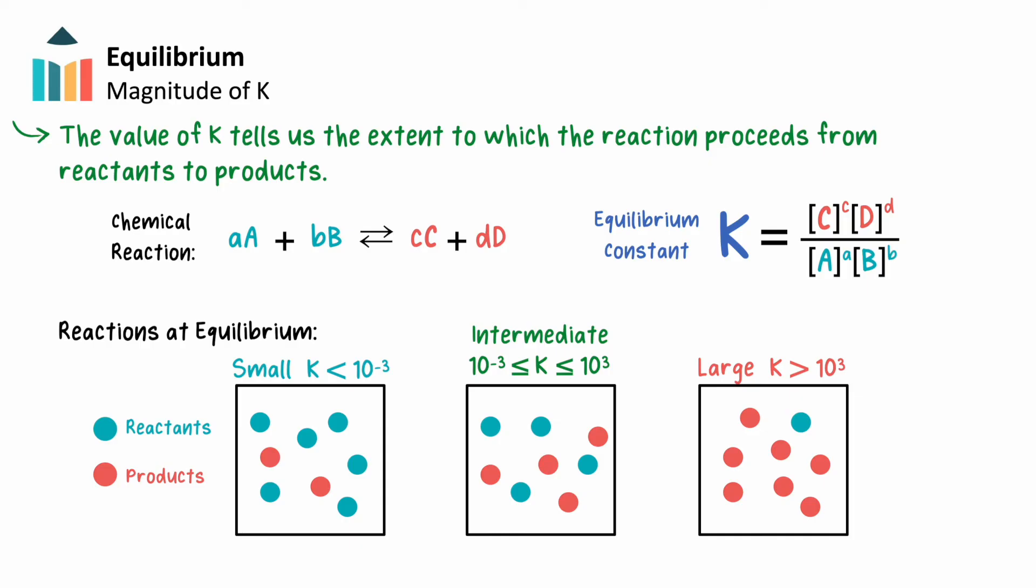When K is large, shown as being greater than 10 to the third, we have a reaction that is nearly gone to completion, or the full production of products. A good example of this would be a combustion reaction, where nearly all of the reactants are consumed. Intermediate K values are somewhere between these two extreme conditions.